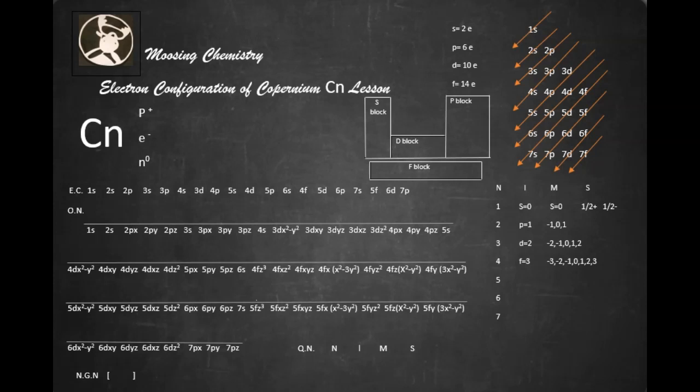Copernicium is element number 112, and its atomic mass unit is 285. And now it means we have 112 protons, electrically neutral, 112 electrons. 285 minus 112 is going to be 173 neutrons.